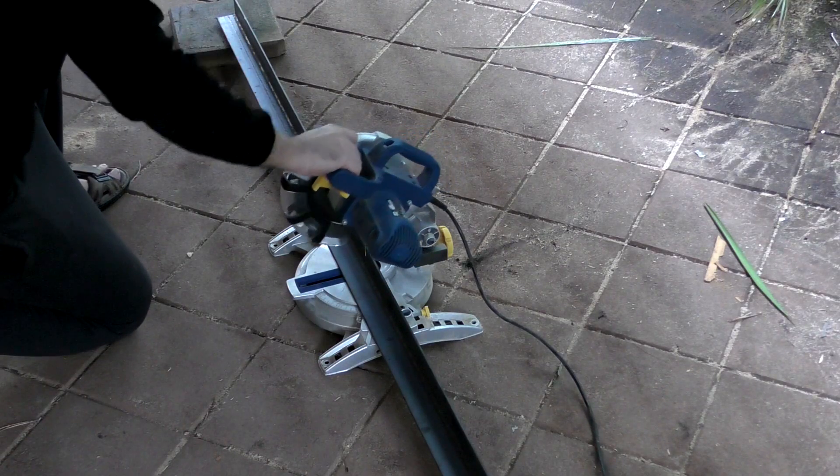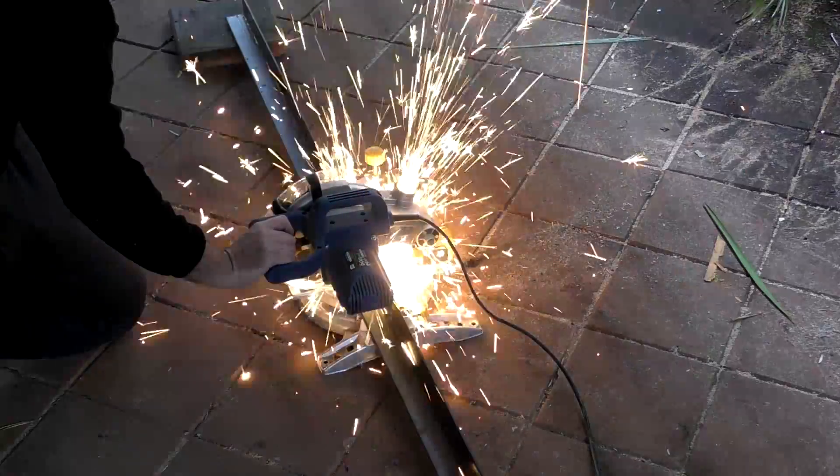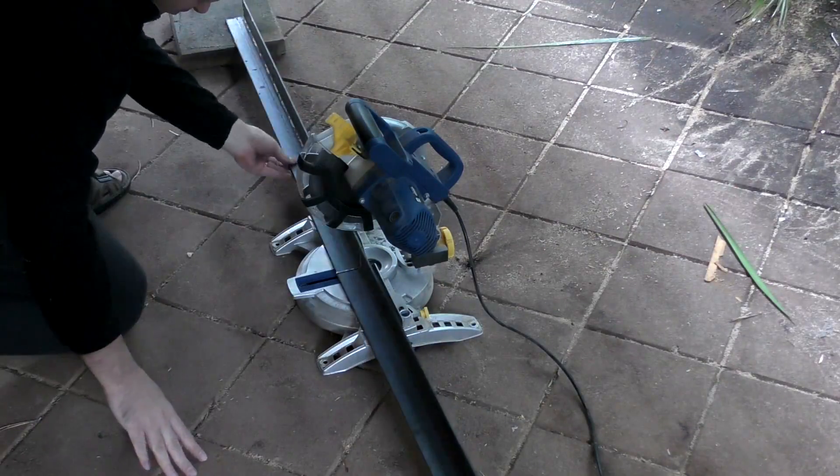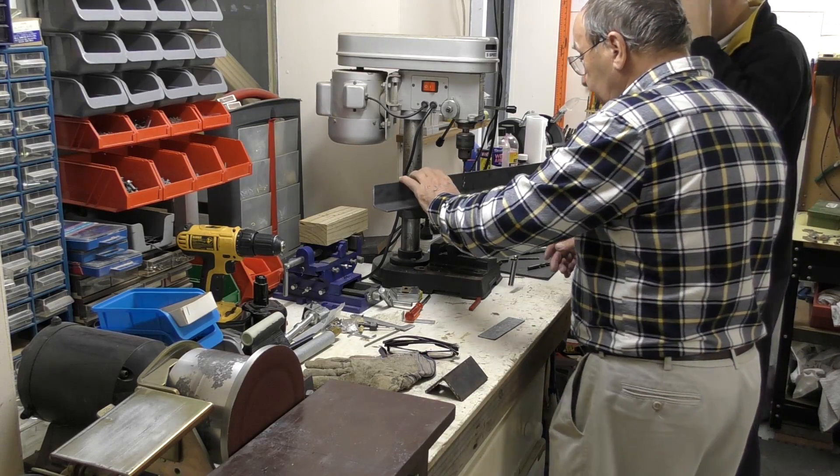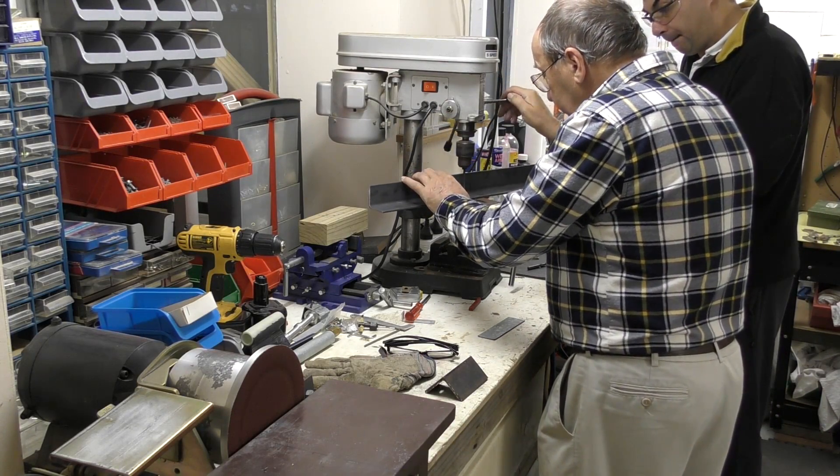First we cut up some heavy steel angle sections that will form the base. These are about one meter long each. They are 50 by 50 millimeters and about five millimeter wall thickness. We then drill a bunch of holes in it for mounting other frame components.